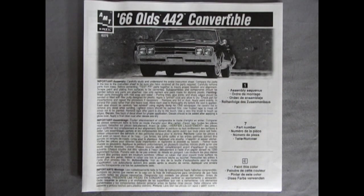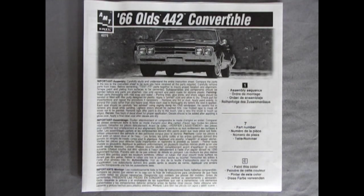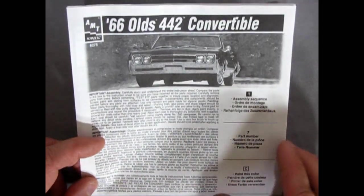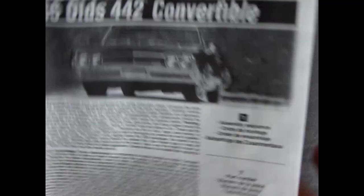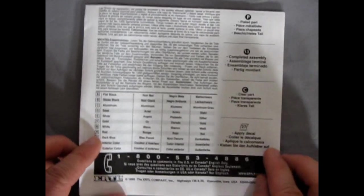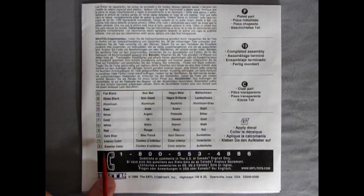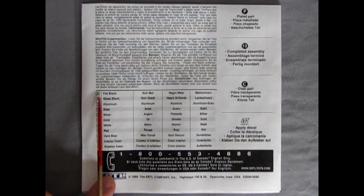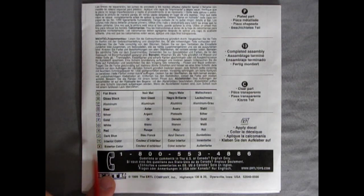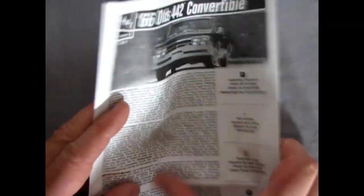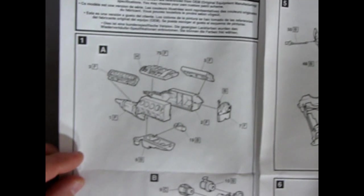Before we get into reviewing our plastic pieces we first have to look at the instruction sheet so we know where our parts are going to go. First off we have the nice photograph of the real 66 Olds 442 convertible up top. As we turn the instructions around here you also get the call number but I don't think this is useful anymore. Here we get a full paint code chart of what we have. For example the letter A is flat black, B is gloss black, and so on. We have to look for these little squares through our instructions to know what colors to paint the model with.